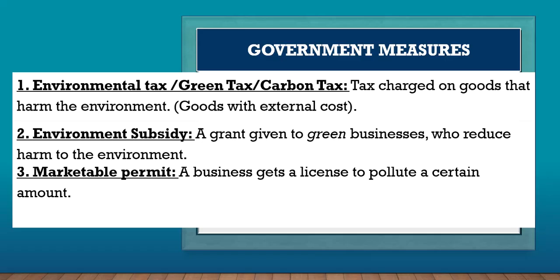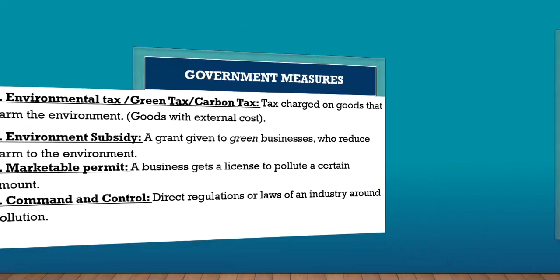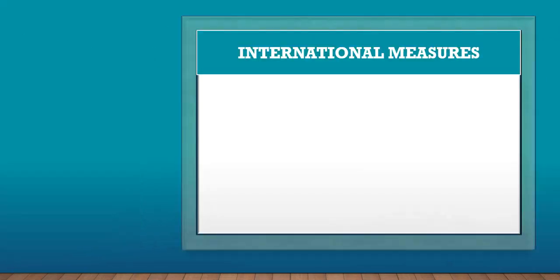A marketable permit is a license that allows a business to pollute only a certain amount. Businesses do need to produce some pollution to provide goods and services, but a marketable permit limits how much they can produce. The government can also enforce command and control by issuing direct regulations and laws regarding pollution.